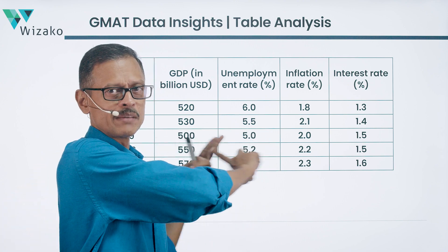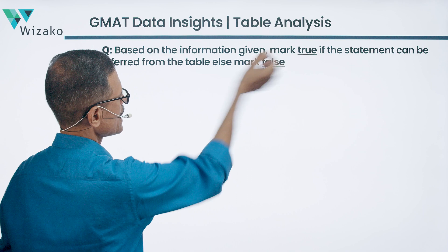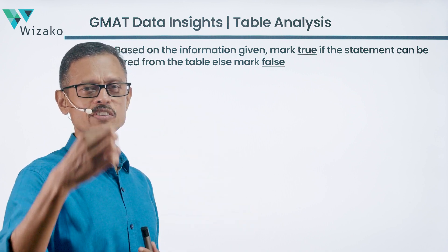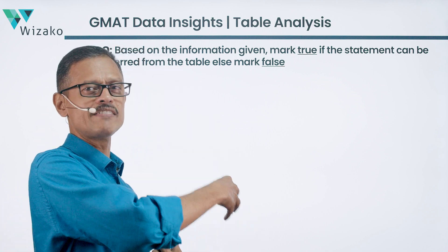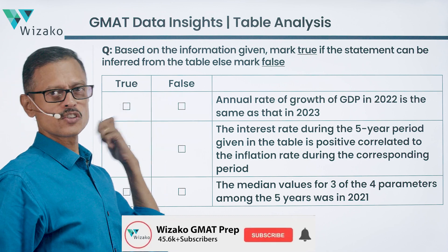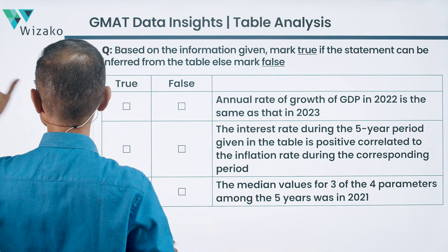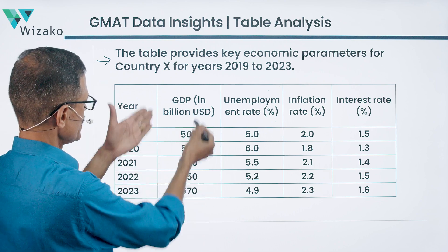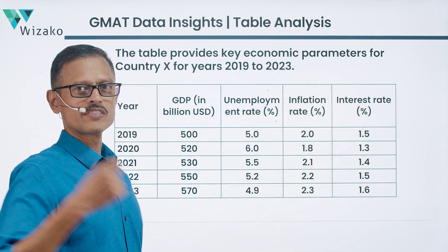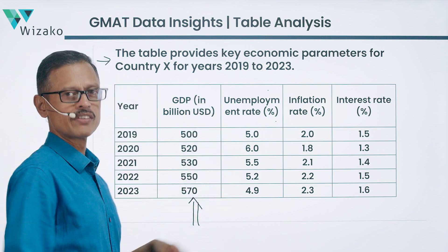So we've looked at the introduction and the table. Now comes the question prompt. In our example: based on the information given, mark true if the statement can be inferred from the table, else mark false. The first statement asks whether the annual rate of growth of GDP in 2022 is the same as in 2023 — essentially a GDP growth rate comparison requiring information from the second column of the table.